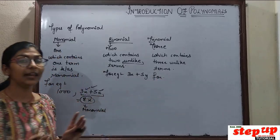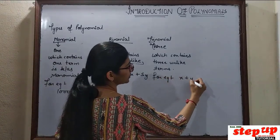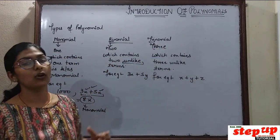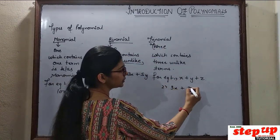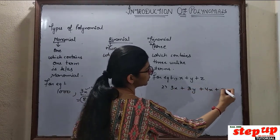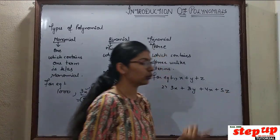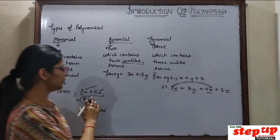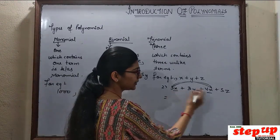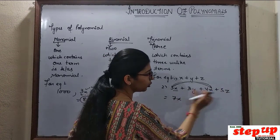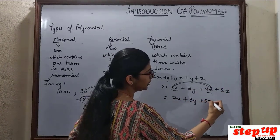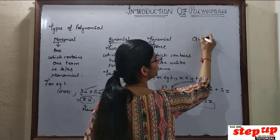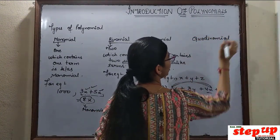For example, x plus y plus z — you have taken three terms, all three are different from each other, so this is trinomial. Next, take 3x plus 3y plus 4x plus 5z — what type of term will this be? This looks trinomial, but notice there are two x terms here. Same x terms combine and become single: 3x plus 4x equals 7x. What remains are unlike terms. So you will not call this quadrinomial. Quadrinomial has 4 terms — which contains 4 unlike terms.